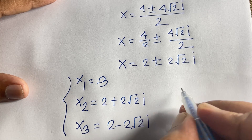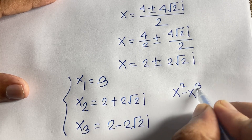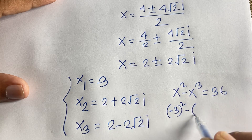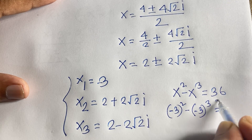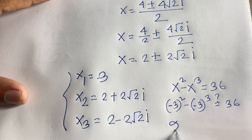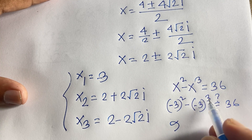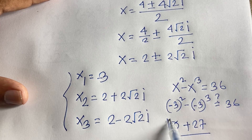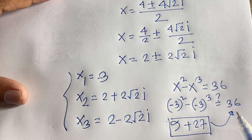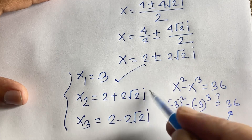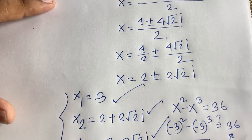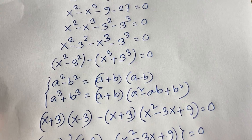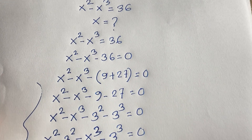Let's verify: our original question is x squared minus x cubed equals 36. Substituting x = −3: (−3)² minus (−3)³ = 9 minus (−27) = 9 + 27 = 36. This confirms x = −3 is correct. Thank you all. If you enjoyed this video, please watch my channel for other interesting videos. Goodbye, take care.